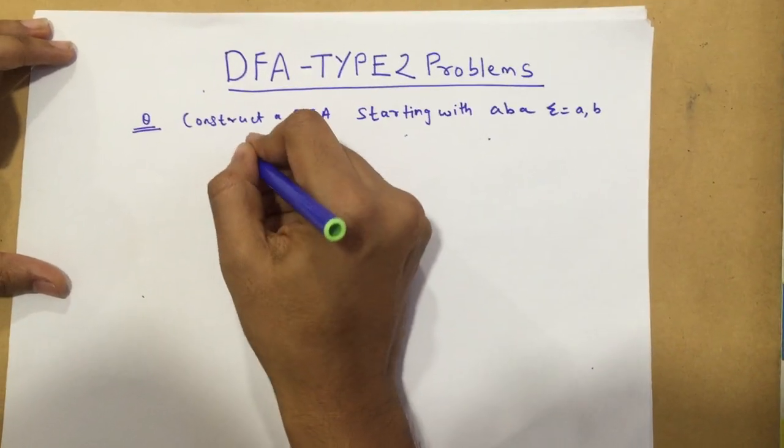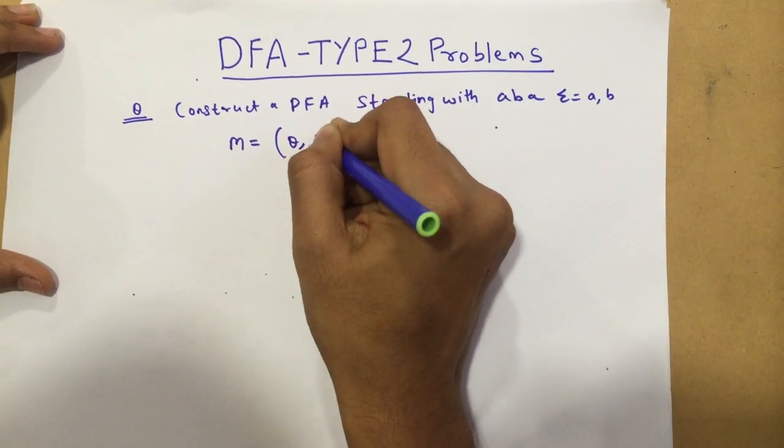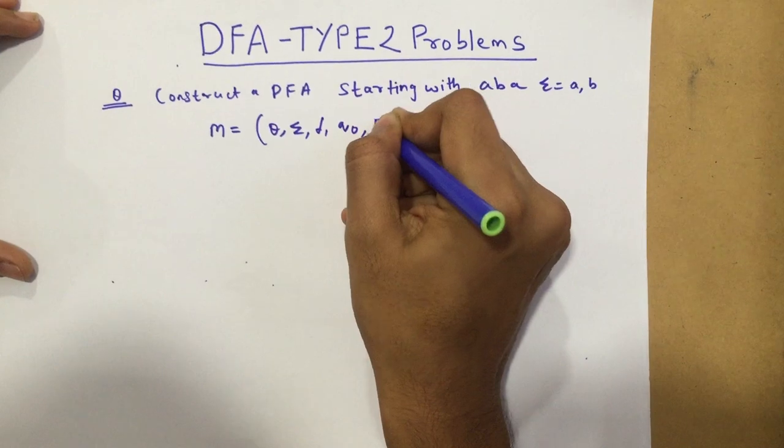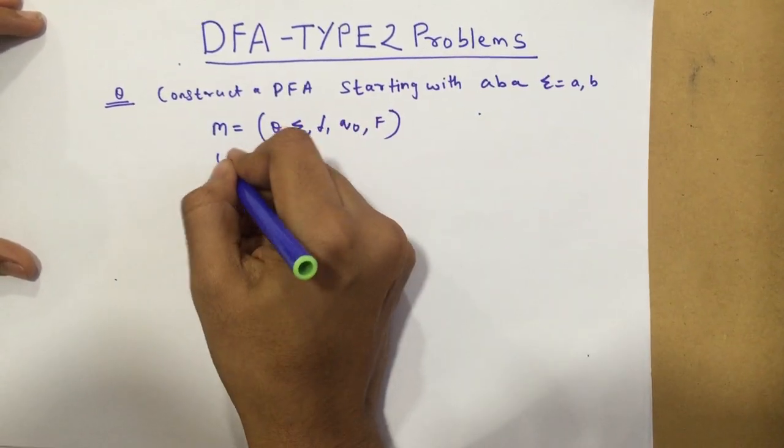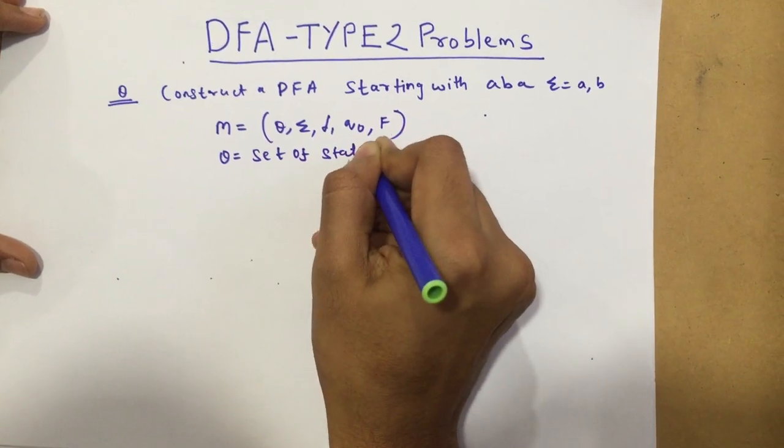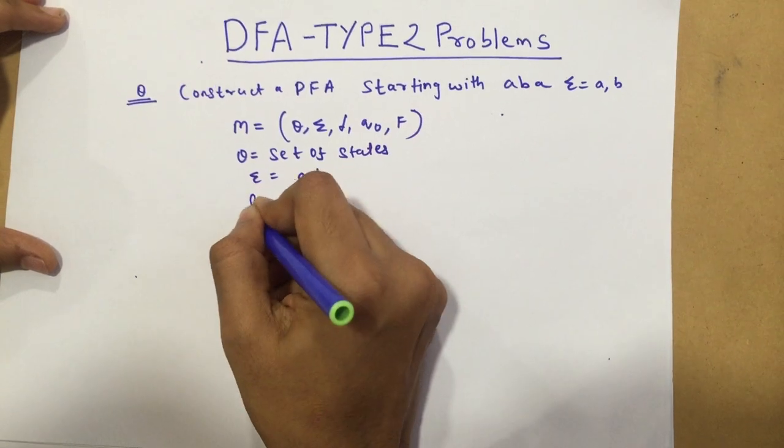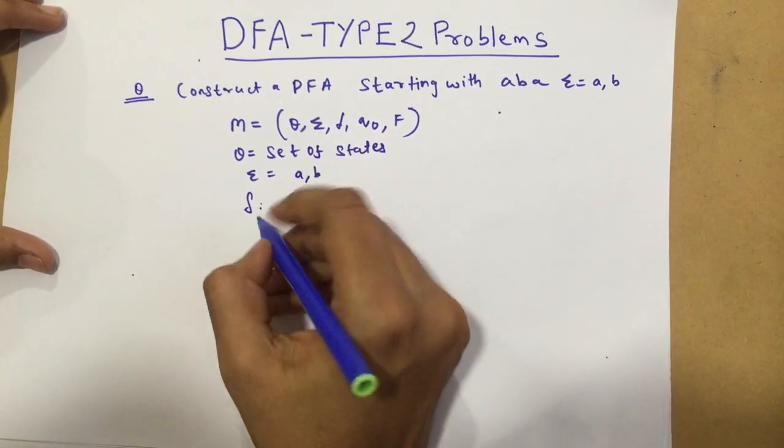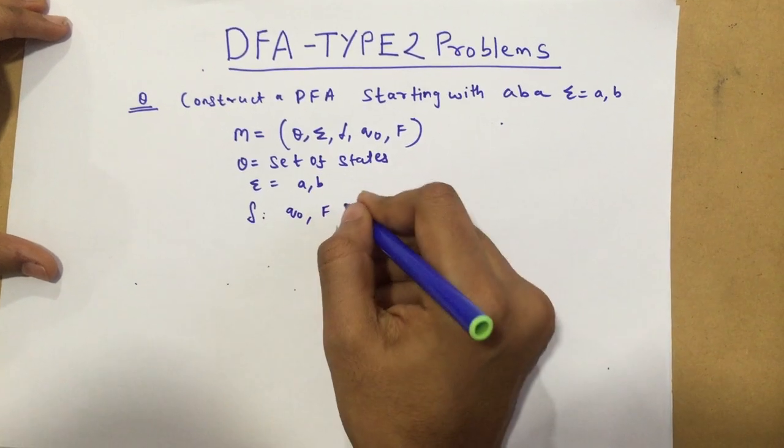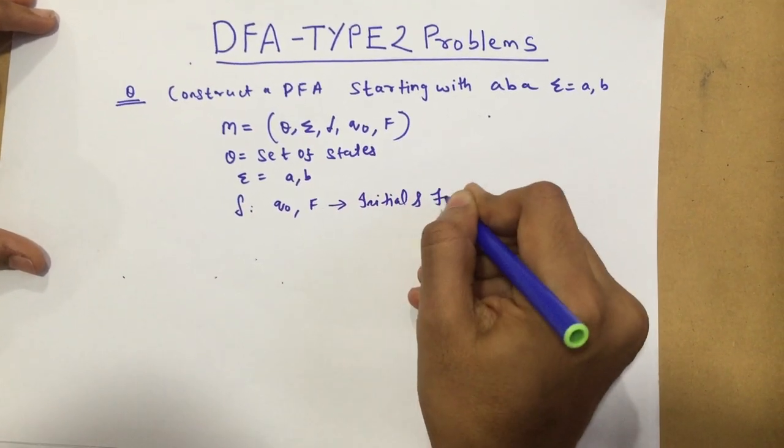First, we're going to draw a tuple that I'm going to define as M equals Q, Σ, δ, Q0, F, where my Q is the set of states. My summation will be A, B, this is my transition function, I'm going to get to it in a bit, and Q0 and F, these are my initial and final states respectively.